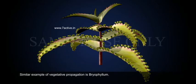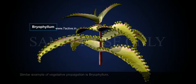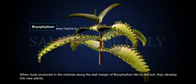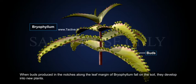A similar example of vegetative propagation is bryophyllum. When buds produced in the notches along the leaf margin of bryophyllum fall on the soil, they develop into new plants.